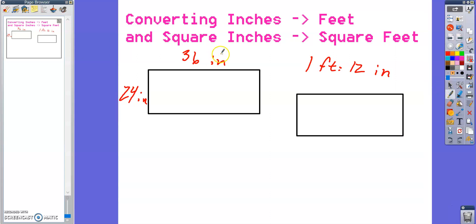Using that same reasoning, 36 inches should be equivalent to 3 feet if I just divide it by 12. So that should be 3 feet. 24 divided by 12 should be 2 feet.